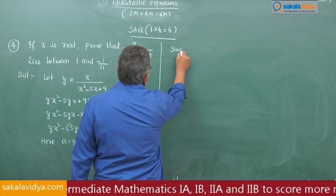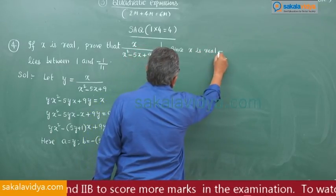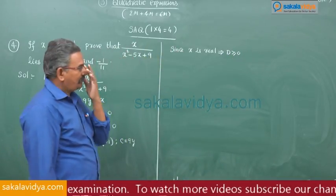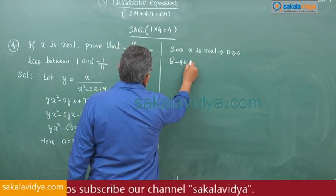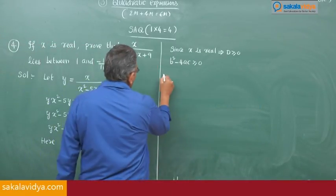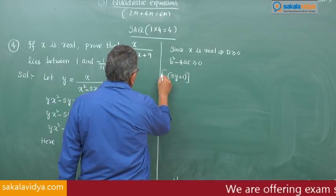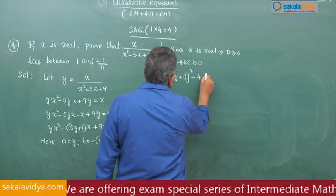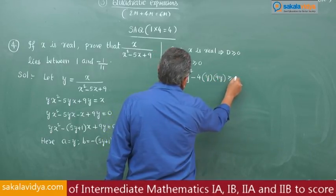Since x is real, discriminant D ≥ 0, so b² - 4ac ≥ 0. Substituting: -(5y + 1)² - 4(y)(9y) ≥ 0, which gives (5y - 1)² - 36y² ≥ 0.